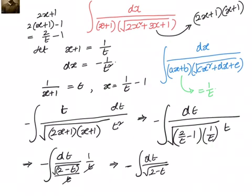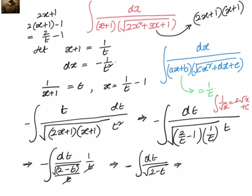We know that the integral of 1 by root x equals 2 root x plus c, because 1 by root x is x to the power minus 1 by 2, and by the formula x to the power (minus 1 by 2 plus 1) divided by (minus 1 by 2 plus 1), we get 2 root x. So the result is 2 into root of (2 minus t) plus c.